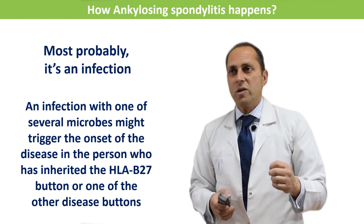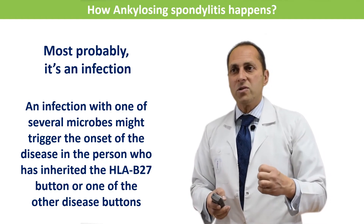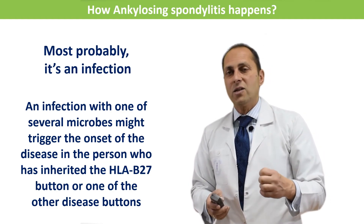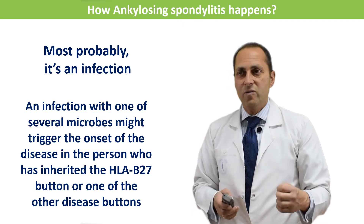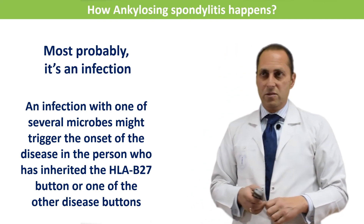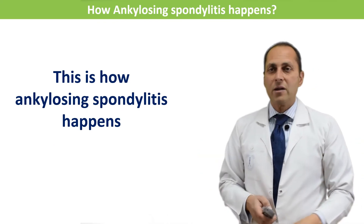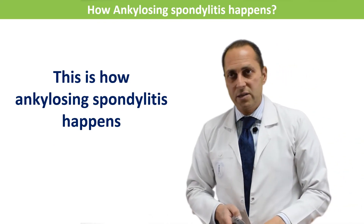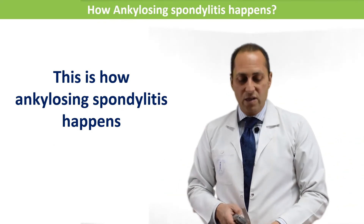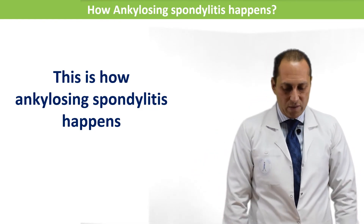One of those microbes might trigger the onset of the disease in the person who has inherited the HLA-B27 button, or one of the other disease buttons. This is how ankylosing spondylitis happens, and this is how the process is initiated in patients who are susceptible to it.